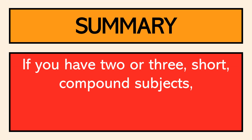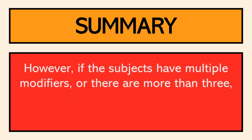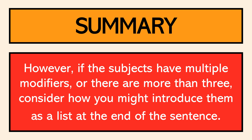So a quick summary: if you have two or three short compound subjects, it likely won't create a barrier to readability. However, if the subjects have multiple modifiers and/or there are more than three subjects, consider introducing them as a list at the end of the sentence rather than beginning with all that information. By opening with the framework — with context the reader can use to understand and categorize that list — you're going to enhance readability and make it easier for your reader to understand your purpose.